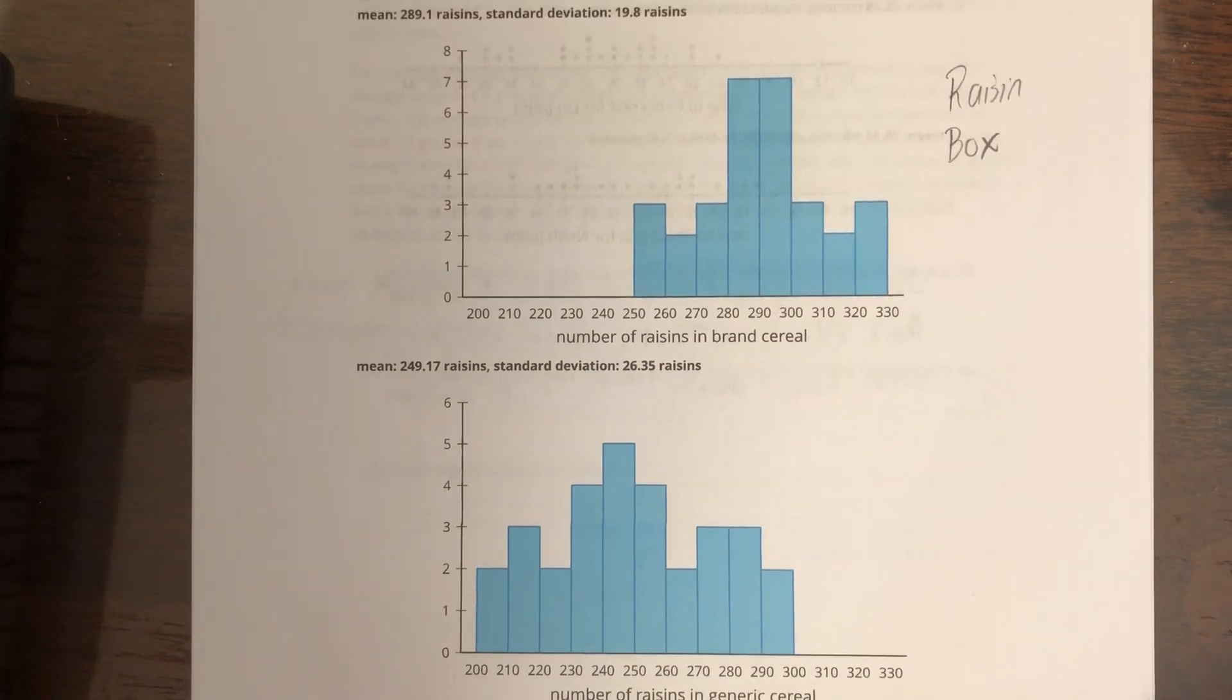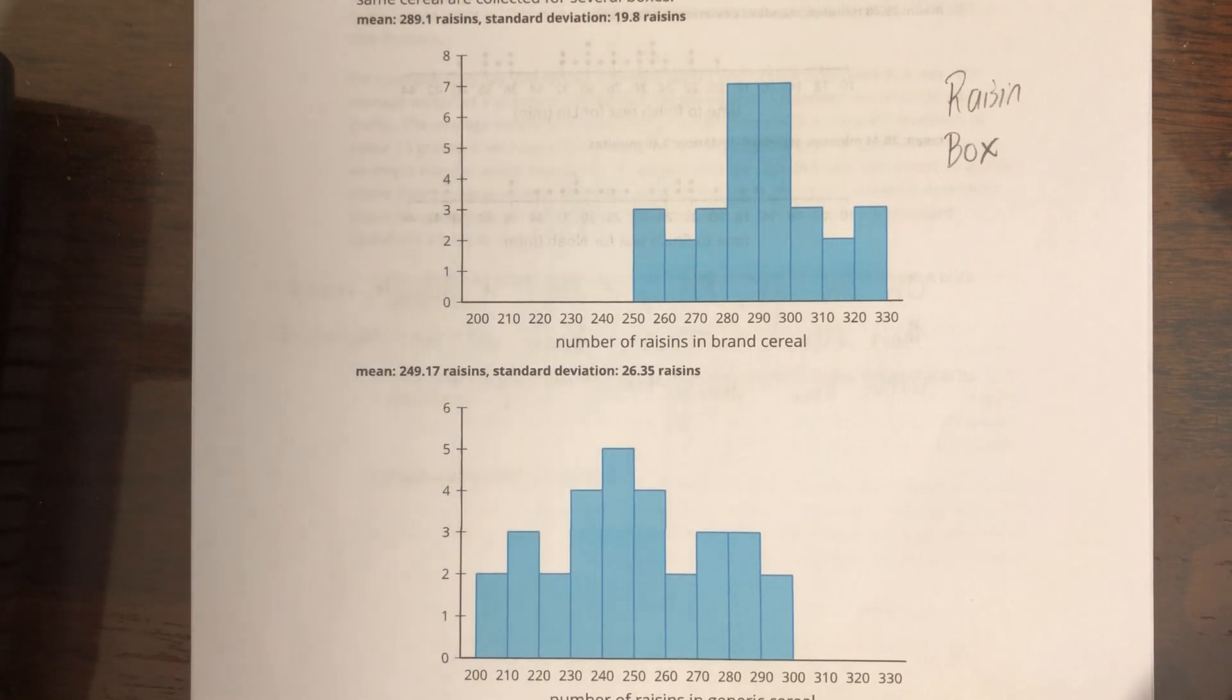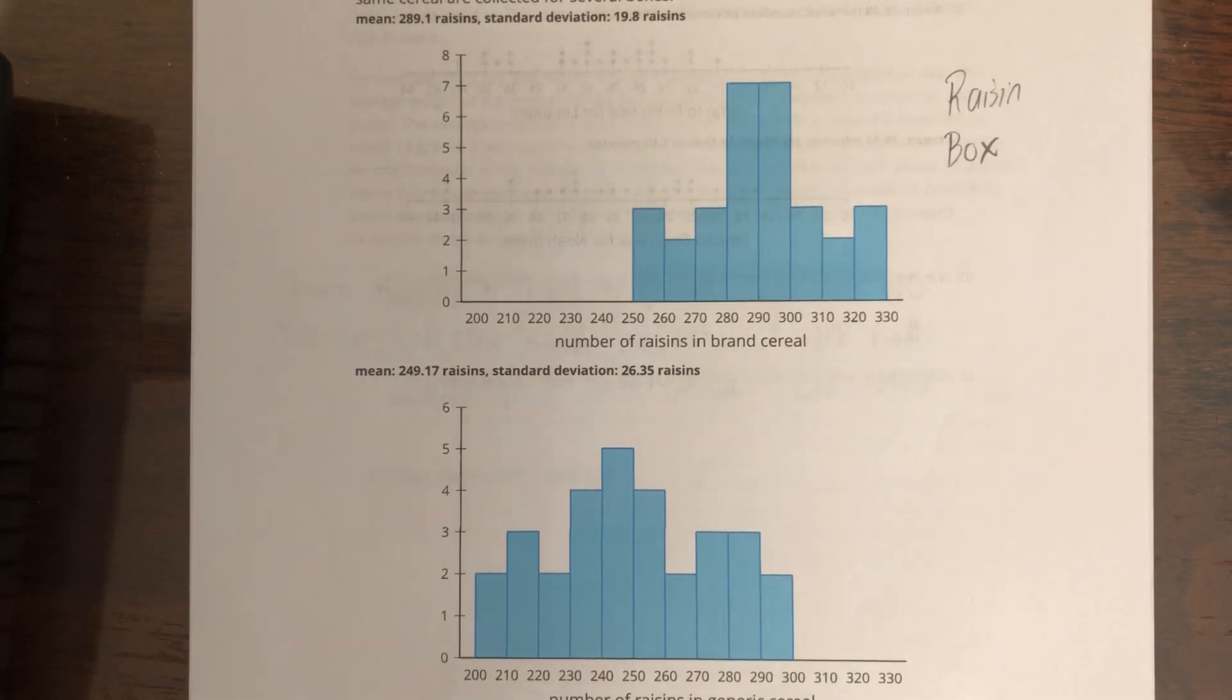So if I compare their means, well first of all, take a look at these graphs, take a look at the mean and standard deviation. How would you interpret the differences between these two?